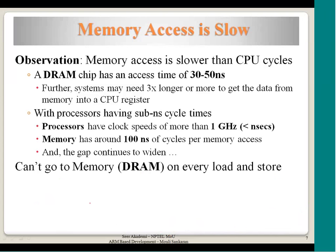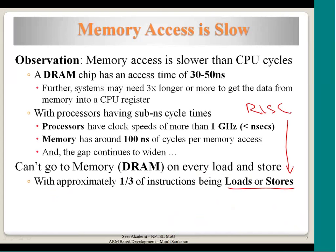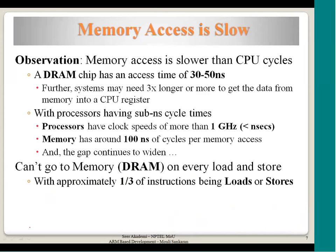Approximately one third of all instructions are loads and stores - around 33 percent - according to a specific example. So about one third of instructions being loads and stores, apart from instruction accesses to memory. In RISC processors like ARM, only load and store instructions access memory - there is no doubt about that. Swap is another type, but the key point is that useful applications require significant memory accesses.